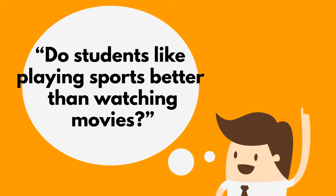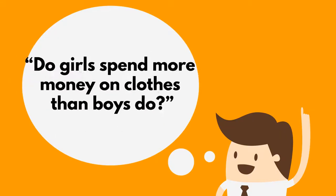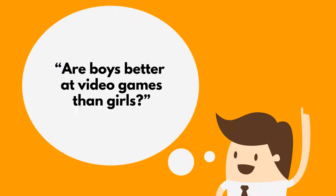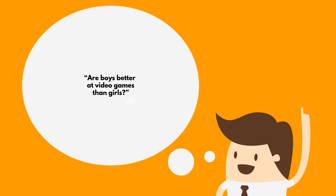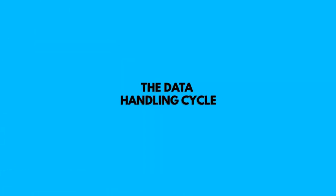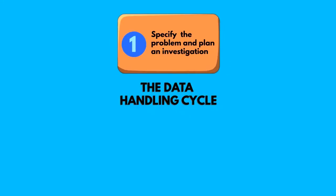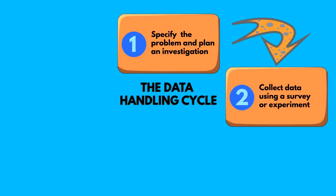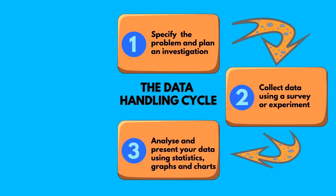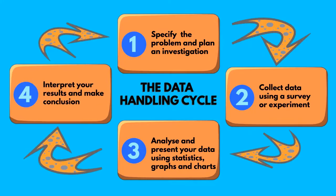Think about an area you might like to research for yourself. Can you think what data you might need to collect to find out what you want to know? You can use something called the data handling cycle to plan any investigation. This has four stages: design and plan how you will go about it, collect the data, process and represent it, and interpret and discuss your findings.